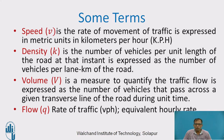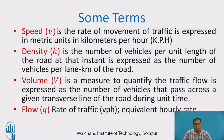Before we go to the fundamental relationship, let us understand some of the terminologies related to traffic characteristics. Speed is the rate of movement of traffic, expressed in kmph. Density is the number of vehicles per unit length of the road at that instant, expressed in number of vehicles per kilometer.